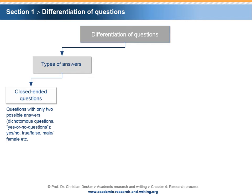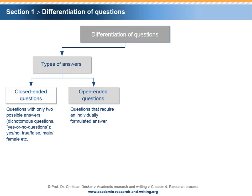A closed-ended question is, for example: have you read the book? This question is answered by either yes or no. In comparison, open-ended questions are questions that require an individually formulated answer. An open-ended question is, for example: what is the book about?